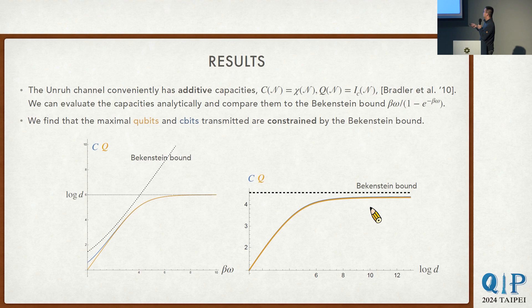What we see is that these curves depict the classical and quantum capacity, and this dashed line depicts the Bekenstein bound. In these two plots, I vary different parameters of the channel—here the number of species, basically the input dimension of the channel, and here I vary the bound itself. There are no surprises: the maximum number of qubits and classical bits transmitted through this channel are constrained by the bound.